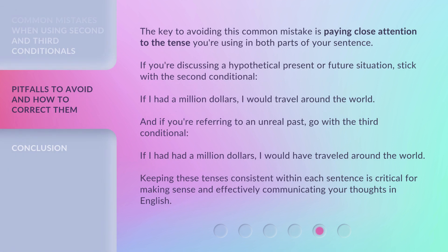The key to avoiding this common mistake is paying close attention to the tense you're using in both parts of your sentence. If you're discussing a hypothetical present or future situation, stick with the second conditional: 'If I had a million dollars, I would travel around the world.' And if you're referring to an unreal past, go with the third conditional: 'If I had had a million dollars, I would have traveled around the world.'